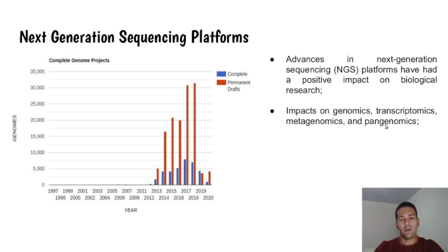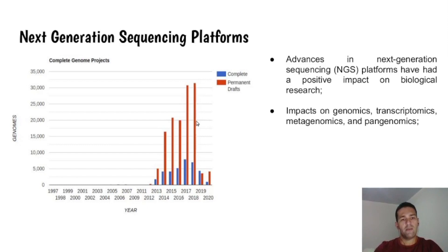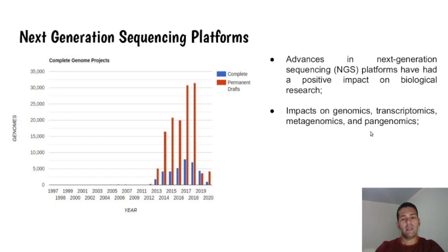There has been a large increase in biological information deposited in public databases. However, as we can see, there is a significant difference between complete genomes and draft genomes deposited in public databases, and the amount of draft genomes impacts other analyses — for instance, pangenomics — because the use of draft genomes can influence the results.